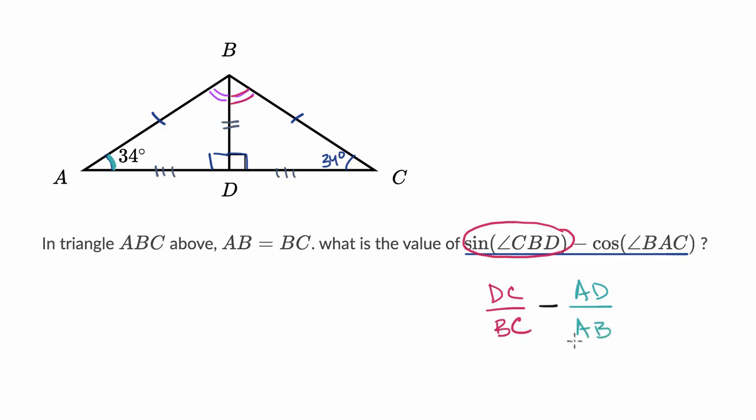Now, how do we figure out what this is going to be equal to? Well, we know a few things already. We know that AB is equal to BC, so we could rewrite this as AB. We also know that AD is equal to DC, so we could write this as AD. And now this is starting to become quite clear. This is AD over AB minus AD over AB, which is going to be equal to zero. And we're done.